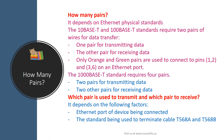The 1000 base-T standard requires four pairs — two pairs for transmitting data and two other pairs for receiving data. This leads us to another question: which pair is used to transmit and which pair is used to receive?